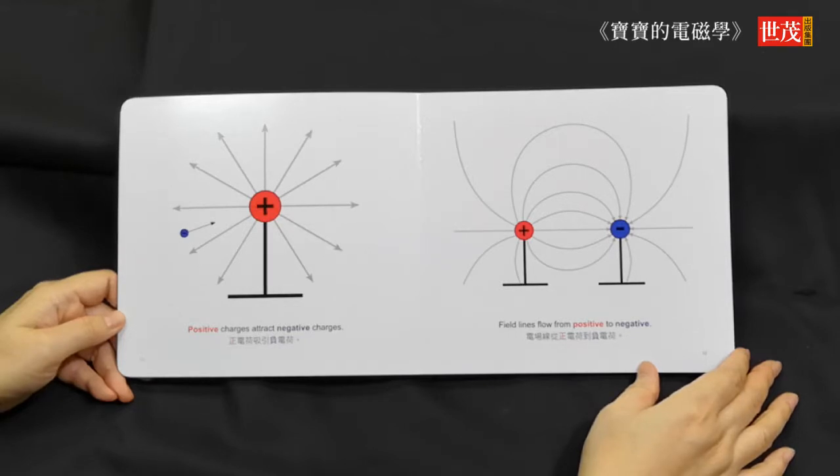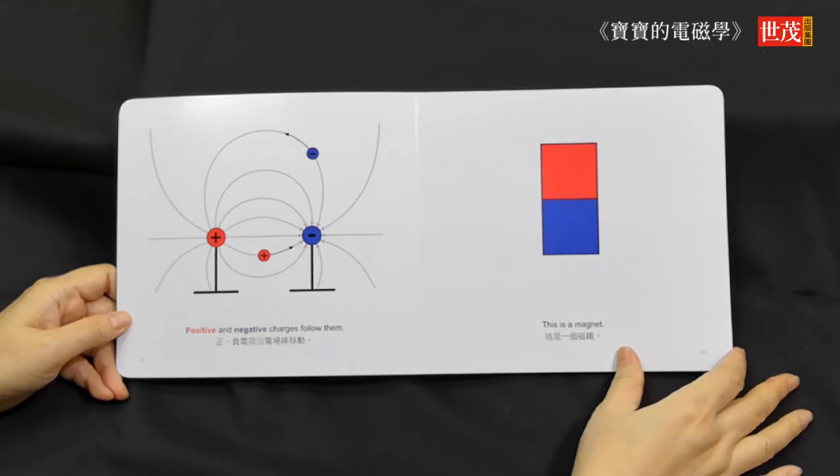The field lines flow from positive to negative. Positive and negative charges follow them.